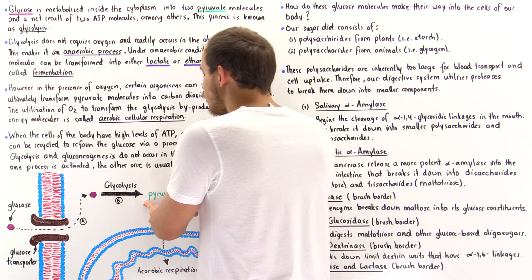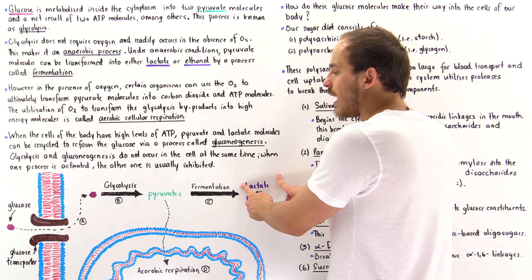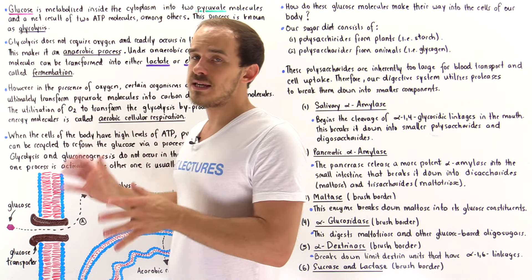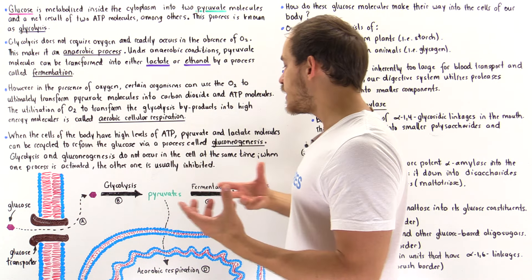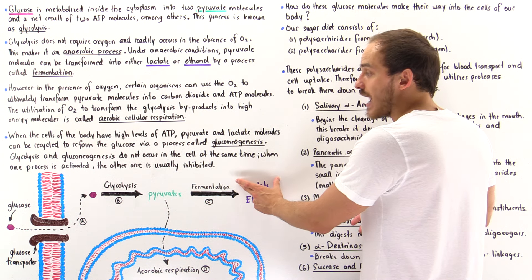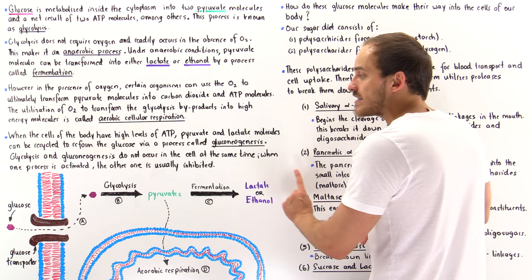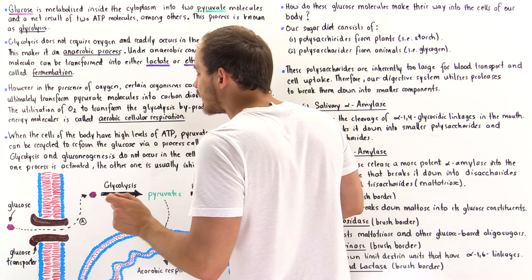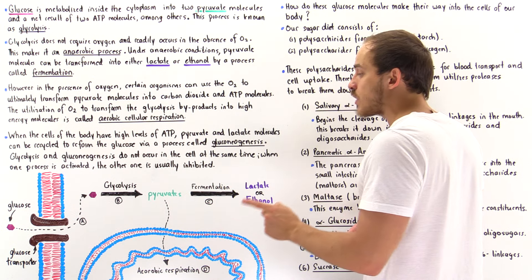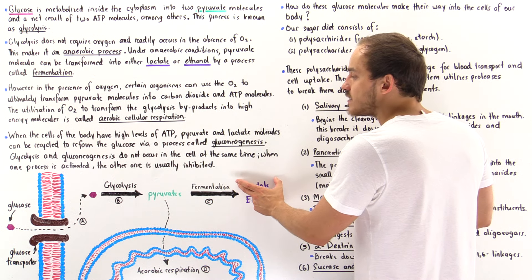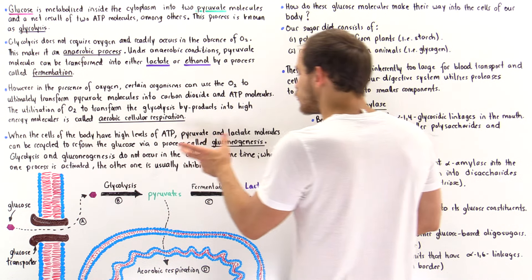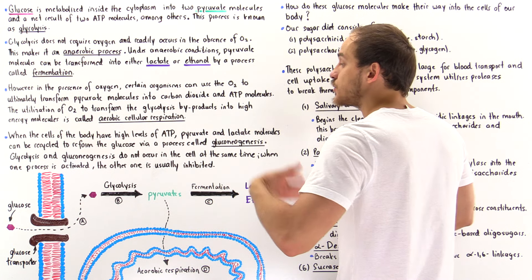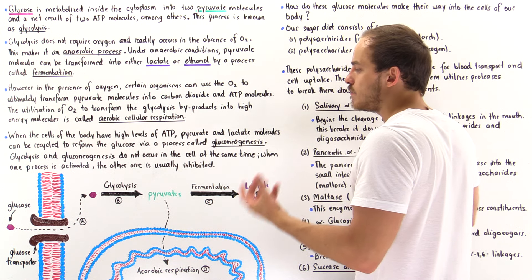What about these pyruvate molecules and lactic acid molecules when we have many ATP inside our body? In this case, these pyruvate or lactic acid molecules are transformed back into glucose, and then the glucose is stored as glycogen. The process by which we transform pyruvates and lactic acid back into glucose is known as gluconeogenesis — glucose means glucose, neo means new molecules, and genesis means formation.